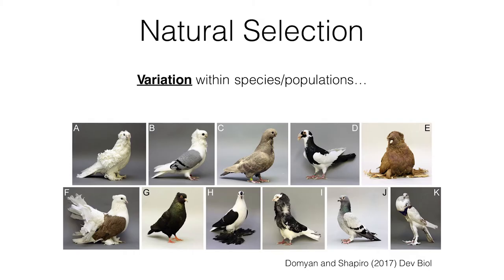Natural selection relies on three main components. The first is that there is variation within a species or within populations of a species. One of Darwin's favorite examples was the variation he saw in pigeon breeds. These are mostly domesticated pigeons, and just like we see different breeds of dogs, there were pigeon fanciers in Victorian England who bred different breeds of pigeon. There's been some recent work on this by the Shapiro lab in Utah, where they're trying to understand the genetic basis of this variation.